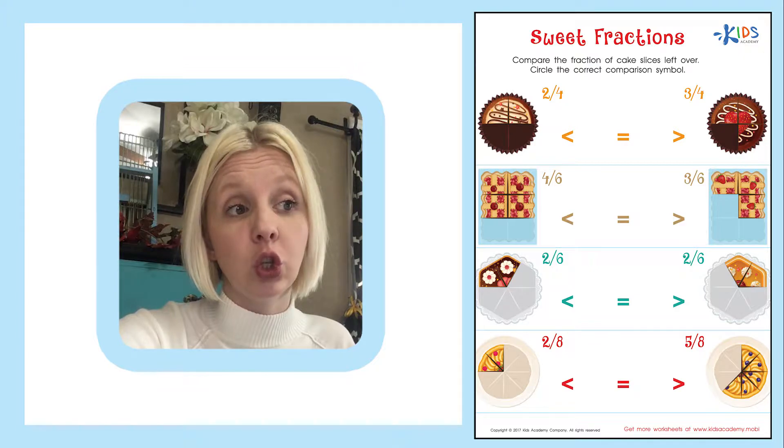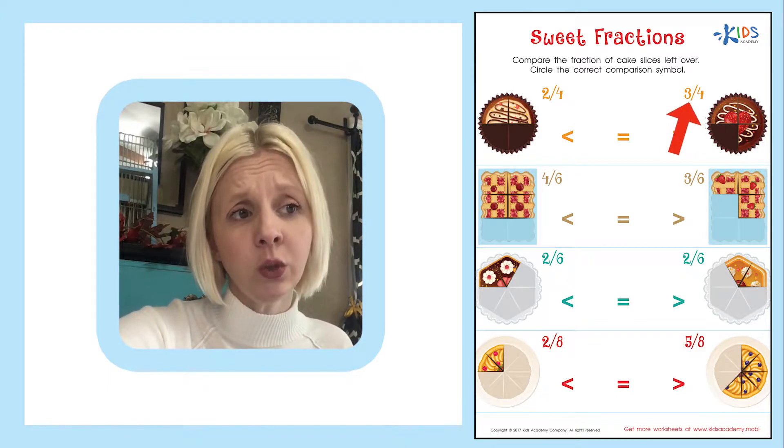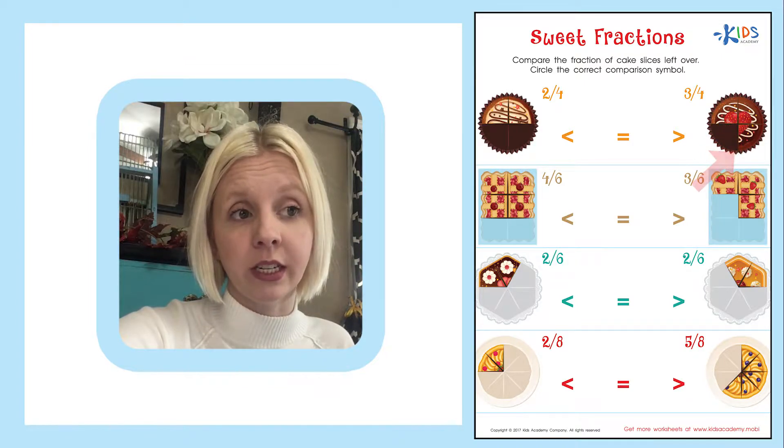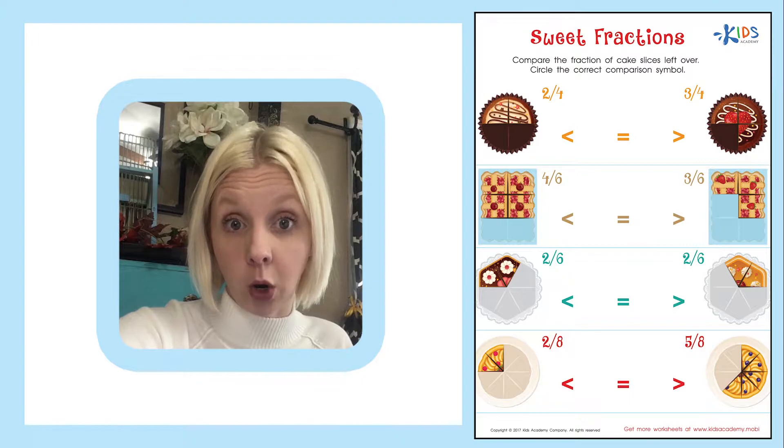The first one is two-fourths. That means there's two pieces out of four left over in this cake. The next one is three-fourths. That means there's four total pieces but only three are left over. So we're trying to find the most.